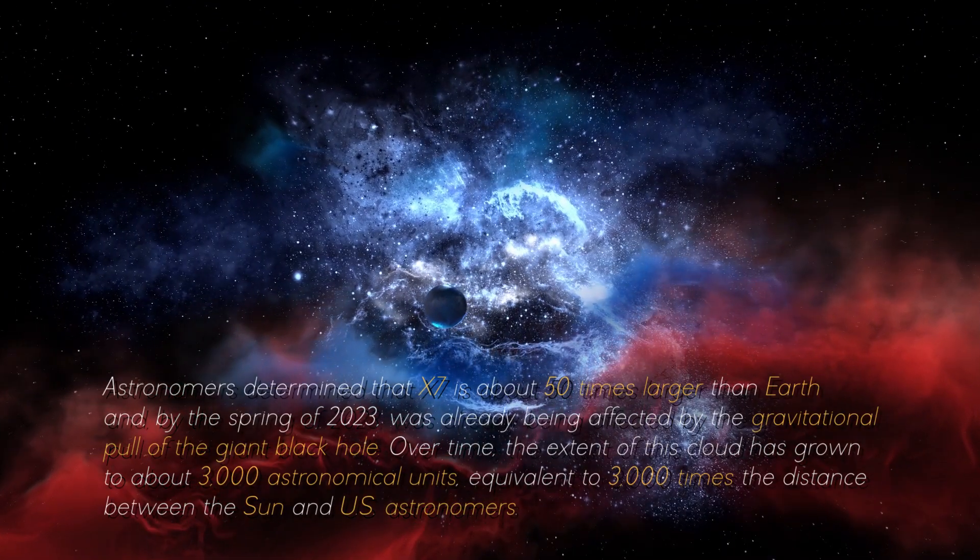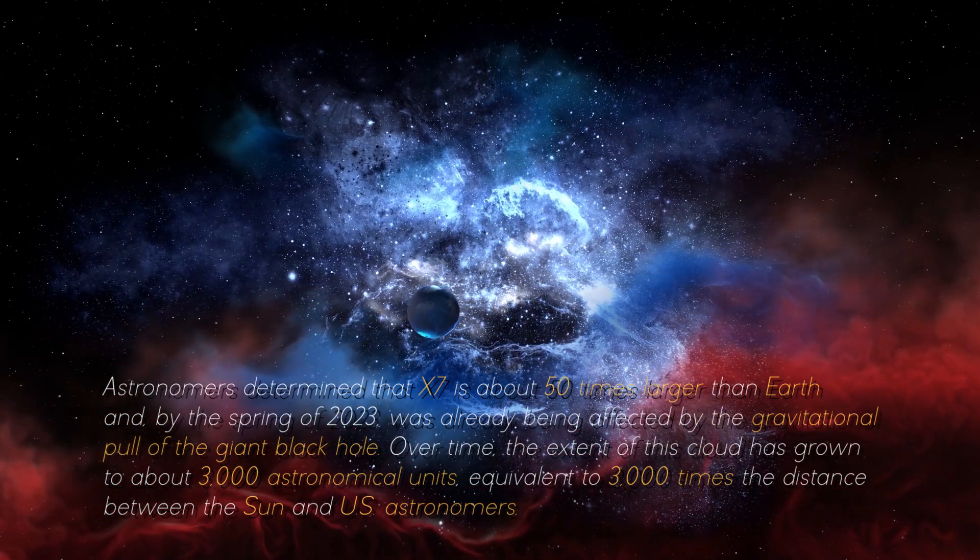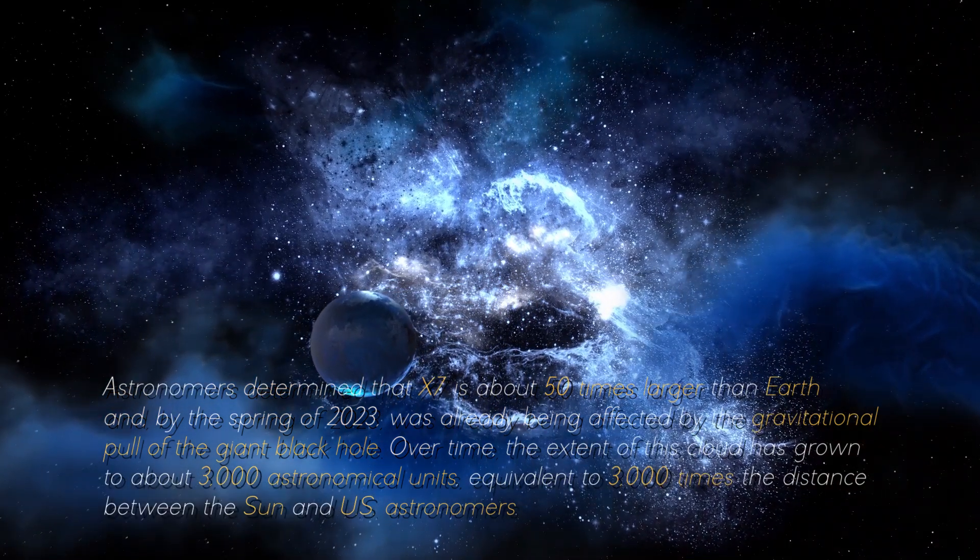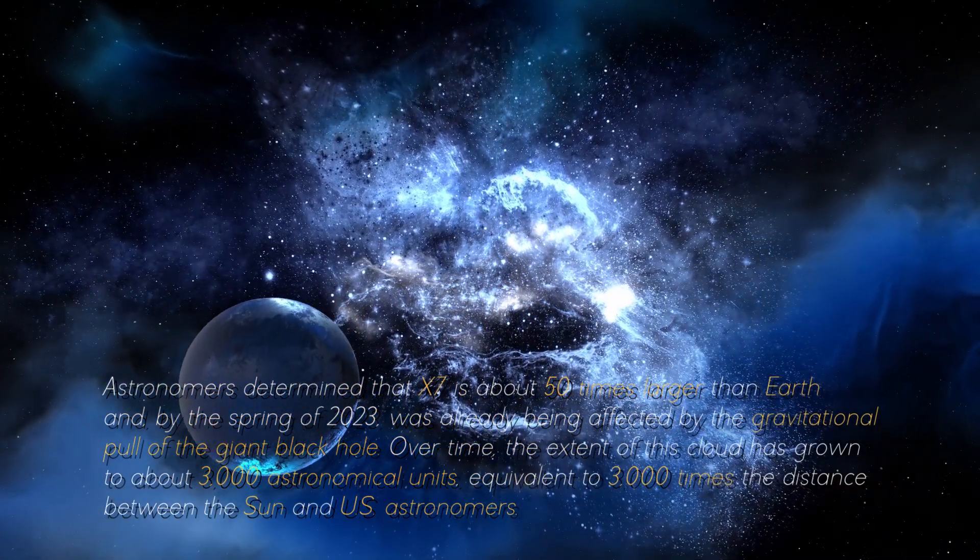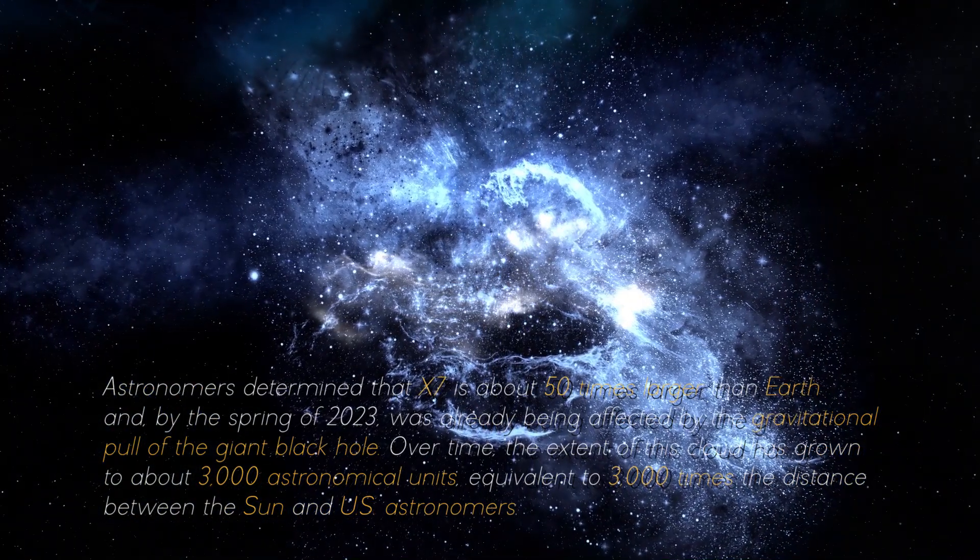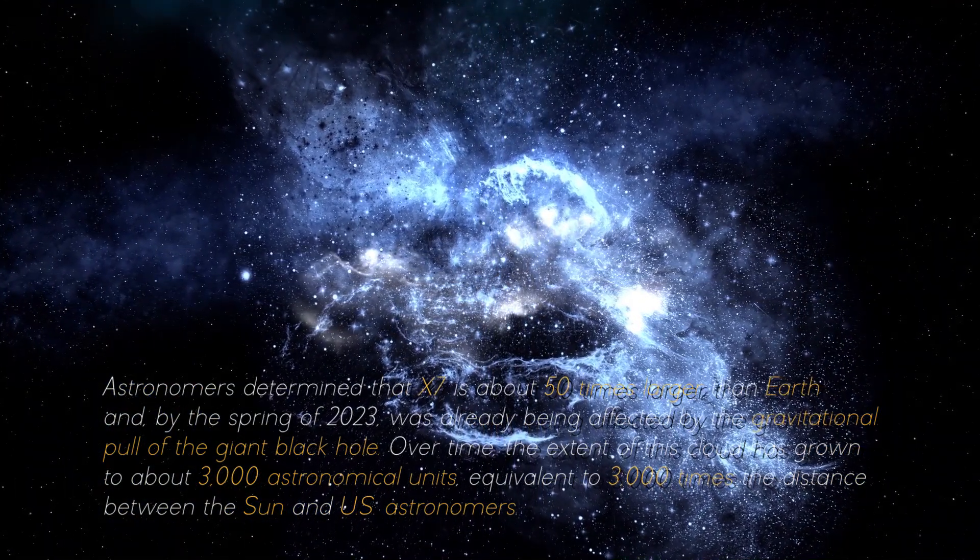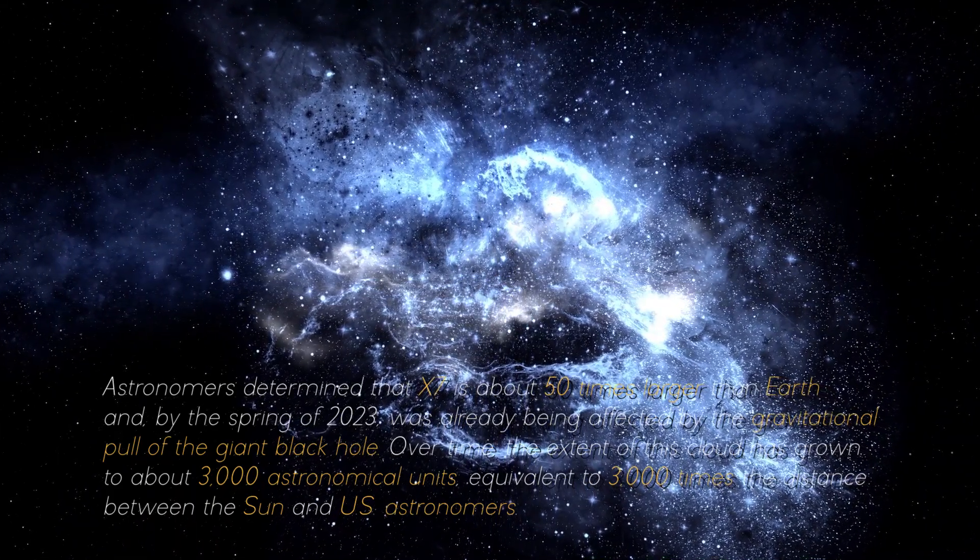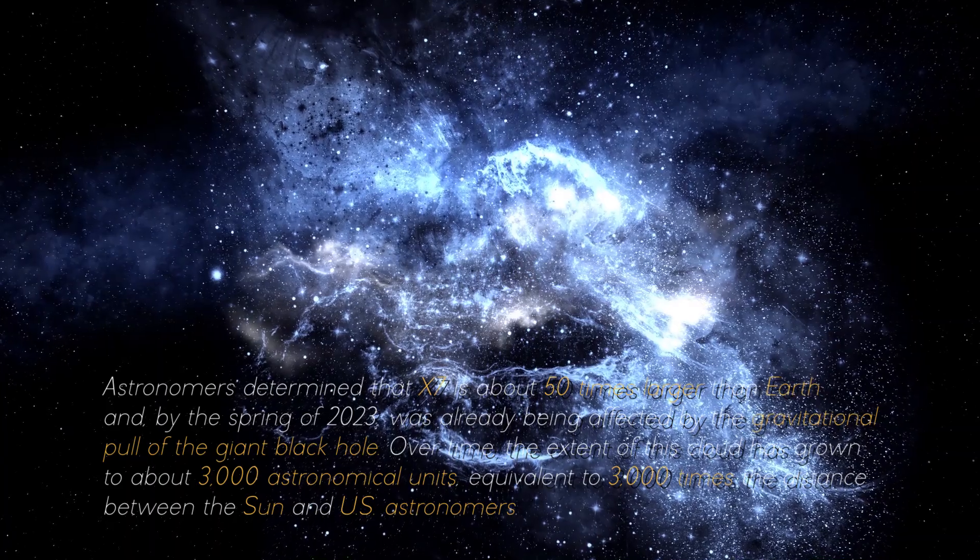Astronomers determined that X7 is about 50 times larger than Earth, and by the spring of 2023 was already being affected by the gravitational pull of the giant black hole. Over time, the extent of this cloud has grown to about 3,000 astronomical units, equivalent to 3,000 times the distance between the Sun and us.